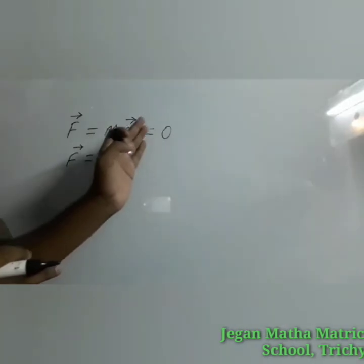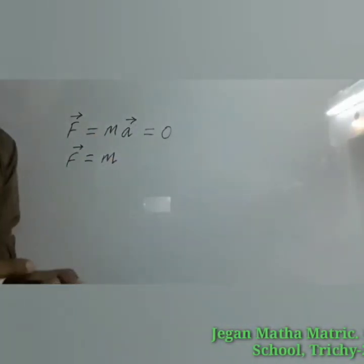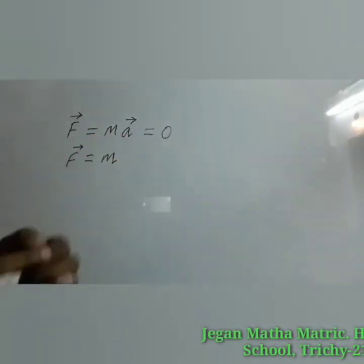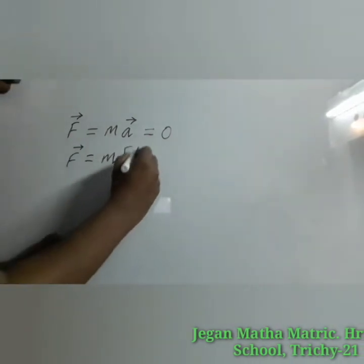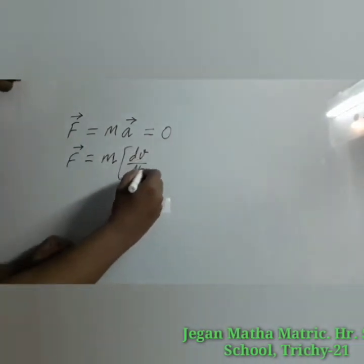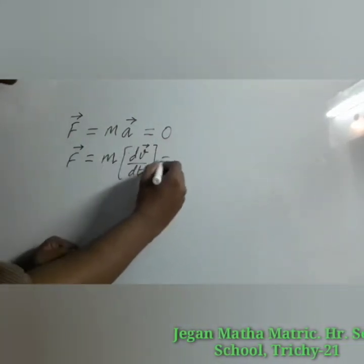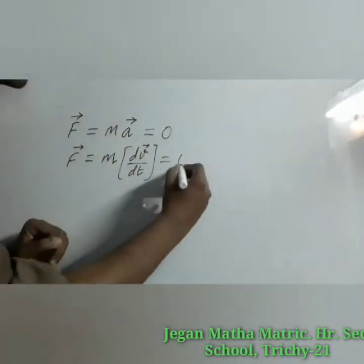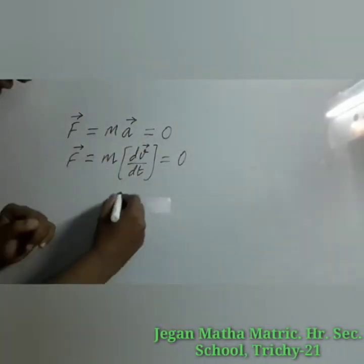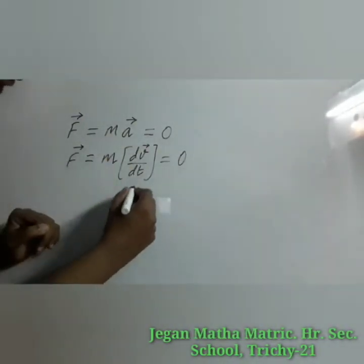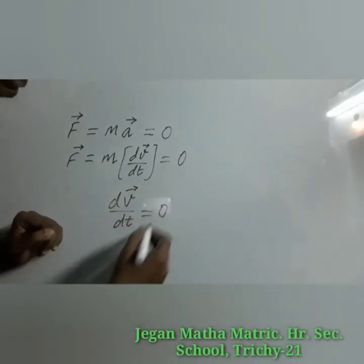If F vector = m·a vector = 0, then a vector can be written as dv/dt, and dv/dt = 0.